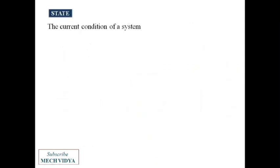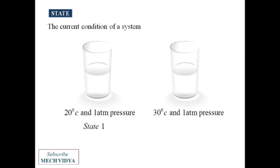A system can still be in a particular phase and change its state. For example, water at 20 degree centigrade and 1 atm pressure will be in one state, whereas the same water at 30 degree centigrade will be at another state. The phase is same.